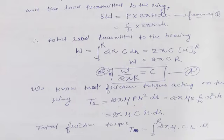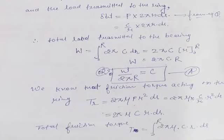Now, friction is acting on the ring. The torque on the ring element was calculated as dT equals 2πμPr² dr. Here we substitute P with C by R, which gives us 2πμCr dr. Now we will find the total friction torque by integrating from 0 to R.